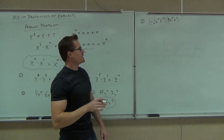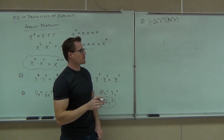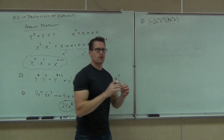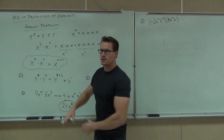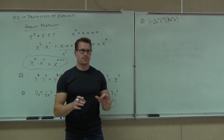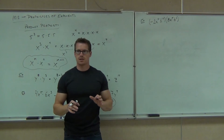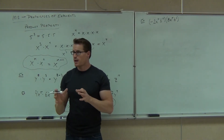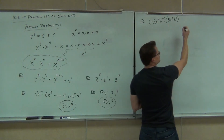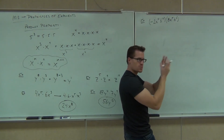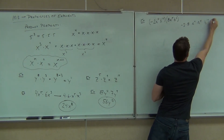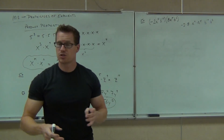Now the next one: negative 2, a to the 4th, b to the 10th times 8, a to the 5th, b to the 3rd. Are they being multiplied? Yes — every single thing in here is multiplication. Can you apply this principle? Take care of the numbers first: negative 2 times 8 gives you negative 16. You could write this all out — negative 2 times 8, then a to the 4th times a to the 5th, then b to the 10th times b to the 3rd — and reassociate them all.